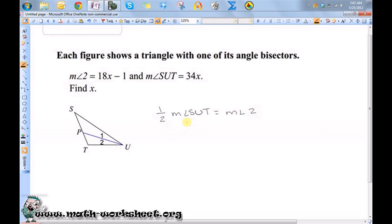So all I'm going to do now is substitute in these expressions for measure of angle 2 and SUT. So one half of SUT is 34X equals 18X minus 1.